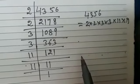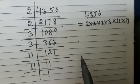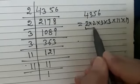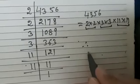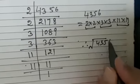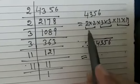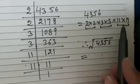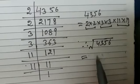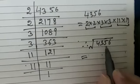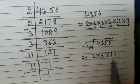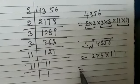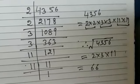The next step is to make pairs of prime factors such that both factors in each pair are equal. Therefore, the square root of 4,356 equals — taking one number from each pair and finding the product — 2 × 3 × 11, which gives 66.